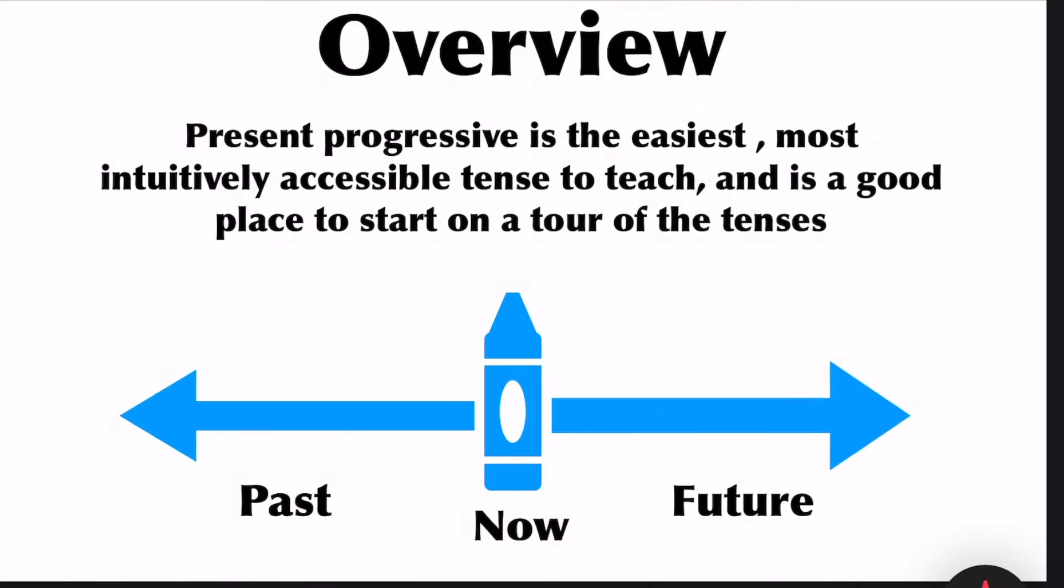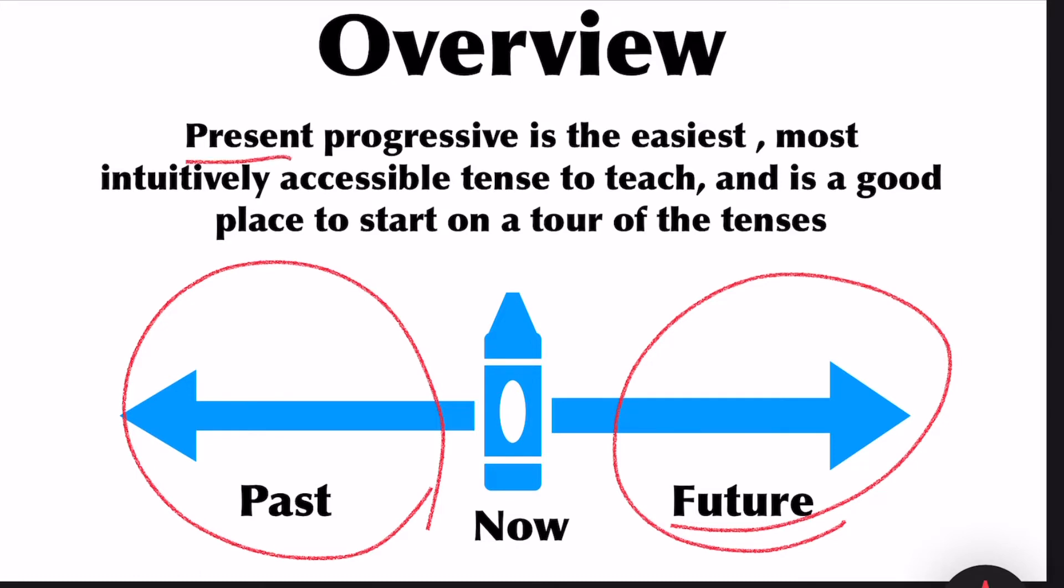Time before the current moment is called past tense and time after the current moment is called future tense.